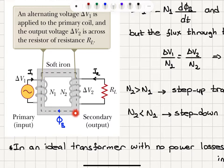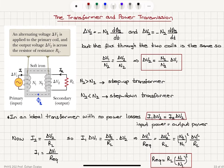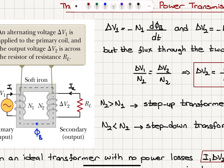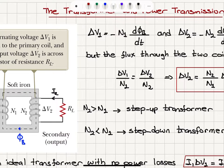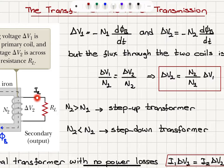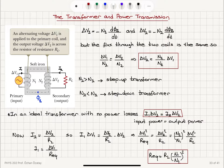The flux that flows in this magnetic circuit will be constant, provided that we neglect any losses in the circuit. Using Faraday's law, ΔV1, the voltage applied between the terminals of the primary coil, equals minus N1 times dΦB/dt. Similarly, on the secondary side, ΔV2, the potential difference appearing between the terminals of the resistor, equals minus N2 times dΦB/dt, since the flux through the two coils is the same.